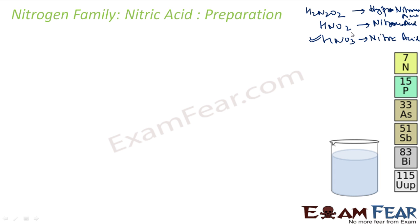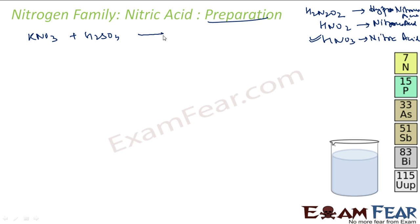For the preparation of nitric acid in the lab, we take KNO₃ or NaNO₃ and some concentrated sulphuric acid in a glass retort. The reaction produces KHSO₄ plus HNO₃. This is the lab preparation of nitric acid.